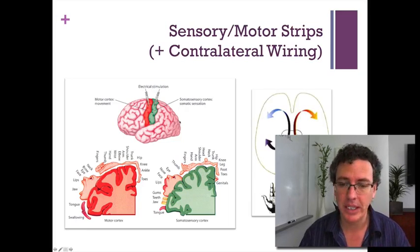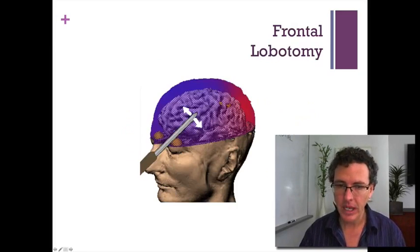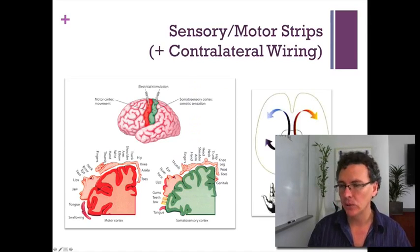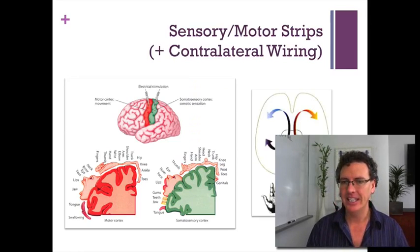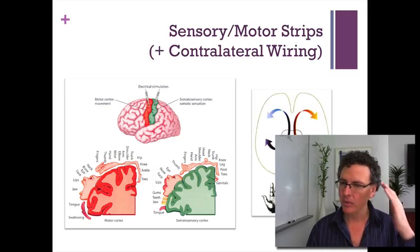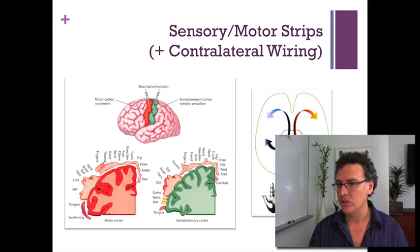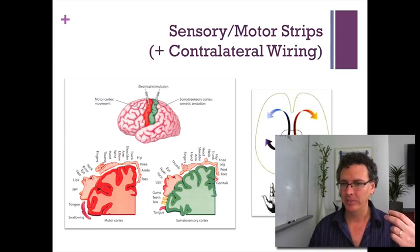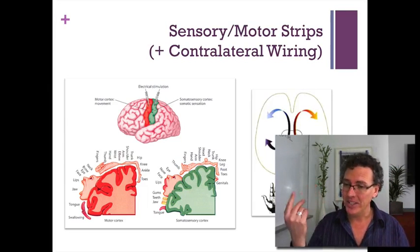I want to make another point about the lobes, and that has to do with what's called their contralateral organization. The left side of our brain, when it comes to both the sensory and motor strips, maps onto the right side of the body, and the right side of the brain maps onto the left side of the body. So there's this weird little crossing that goes on.